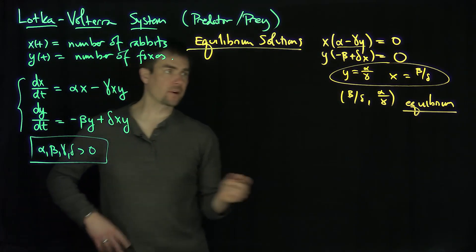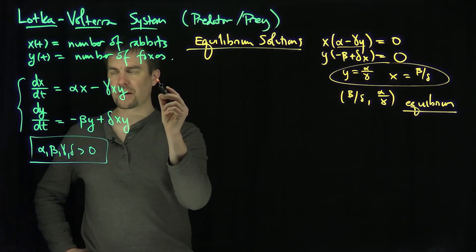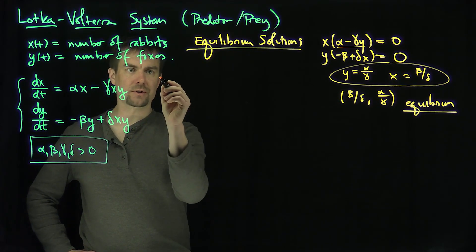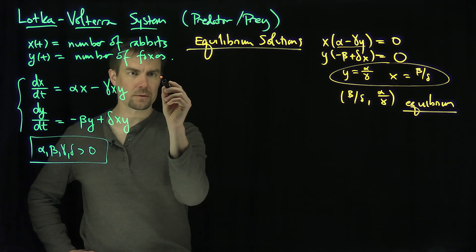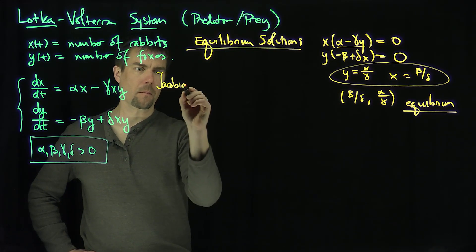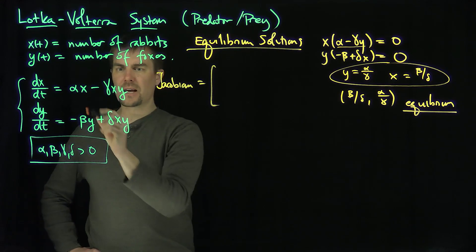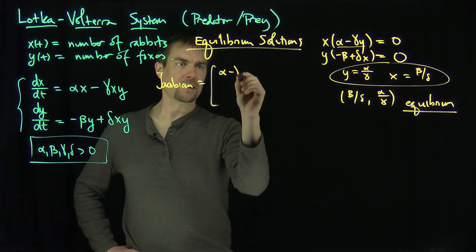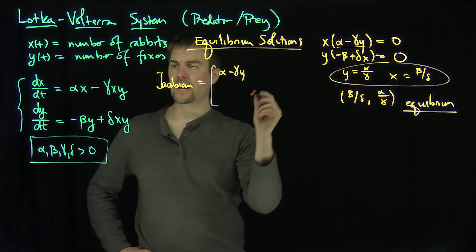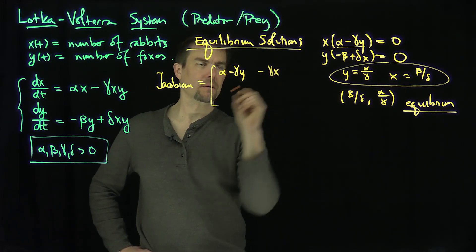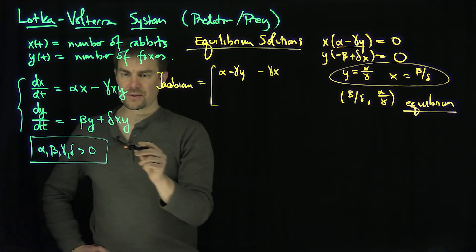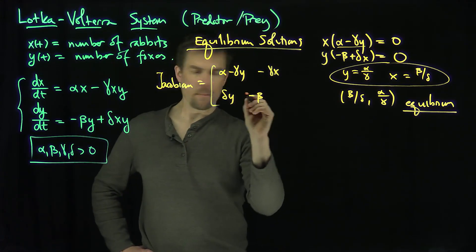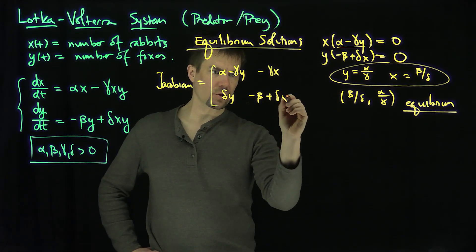Now we want to figure out what the linearization gives us. To linearize the system, we compute the Jacobian matrix. The Jacobian is: the x-derivative of the first function gives alpha minus gamma y; the y-derivative gives negative gamma x; the x-derivative of the second function gives delta y; and the y-derivative gives negative beta plus delta x.